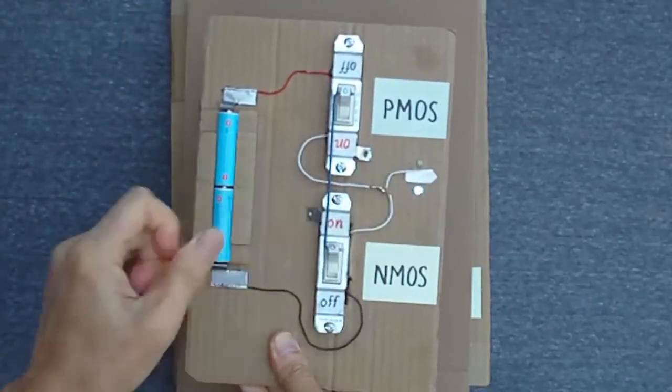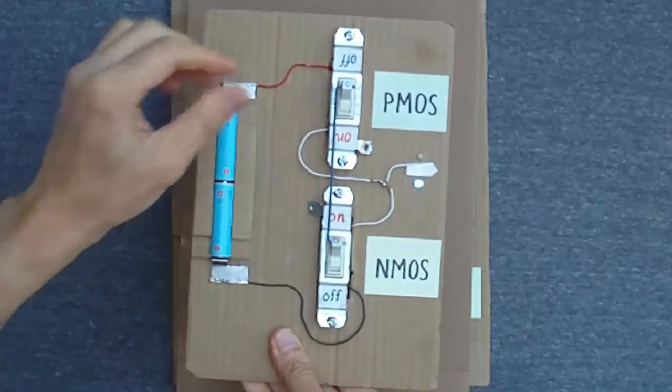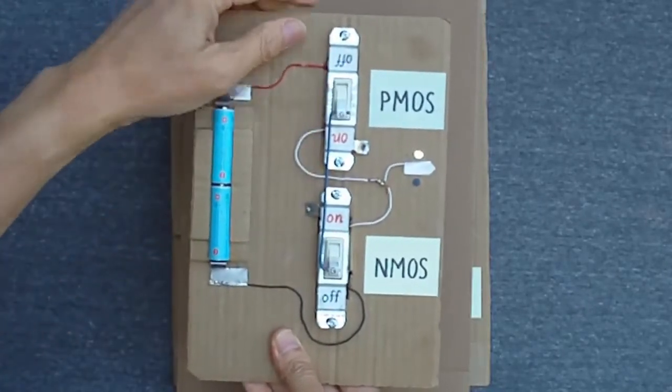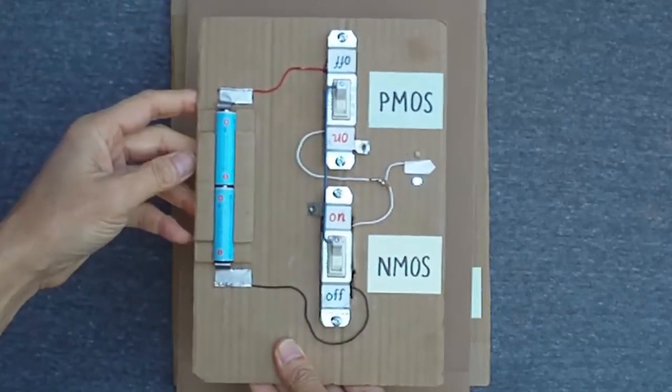This is the inverter function. When one transistor is on, the other is off, so there's never a short circuit from power to ground, and the output never floats.